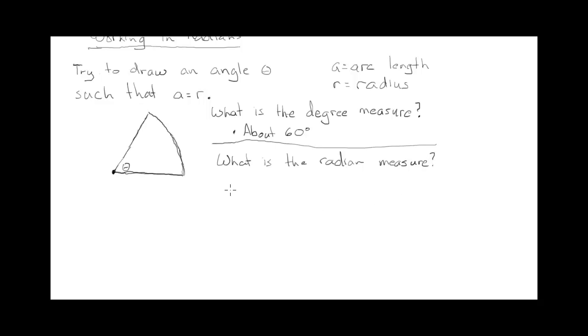So remember that radian measure, theta, is equal to A over R. But in this example, we drew it so that A and R were equal. So you could replace, let's say, we replace A with R. So that would be R over R, which is 1.